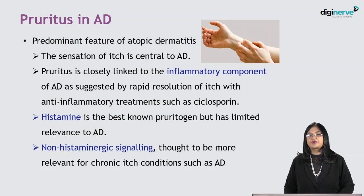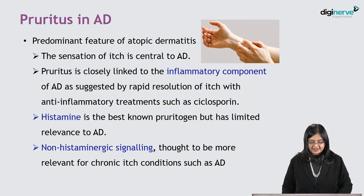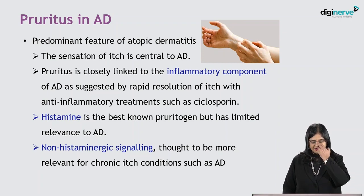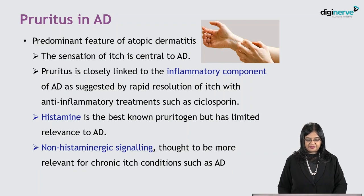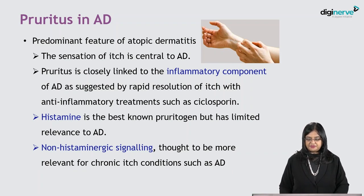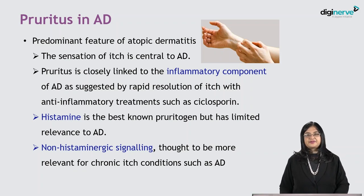One of the most important complaints in atopic dermatitis is pruritus — it is a predominant feature. The sensation of itch is central to AD, and pruritus is closely linked to the inflammatory component of AD, as suggested by the rapid resolution of itch with anti-inflammatory treatments such as cyclosporine. Histamine is the best known pruritogen but has limited relevance to atopic dermatitis.